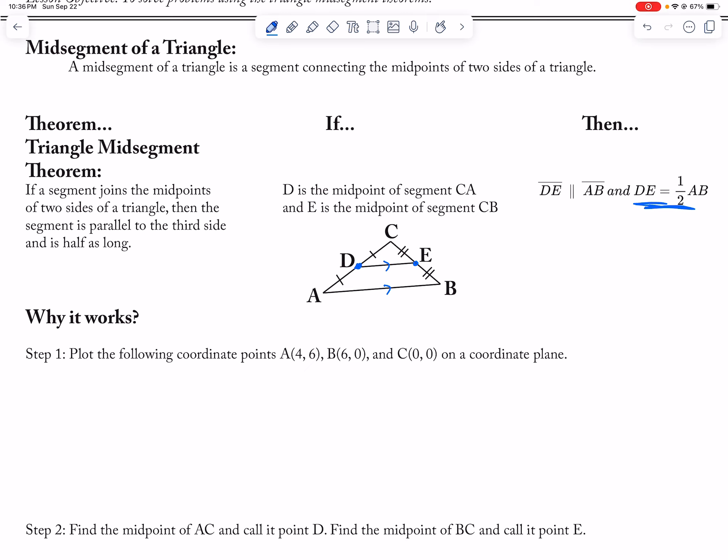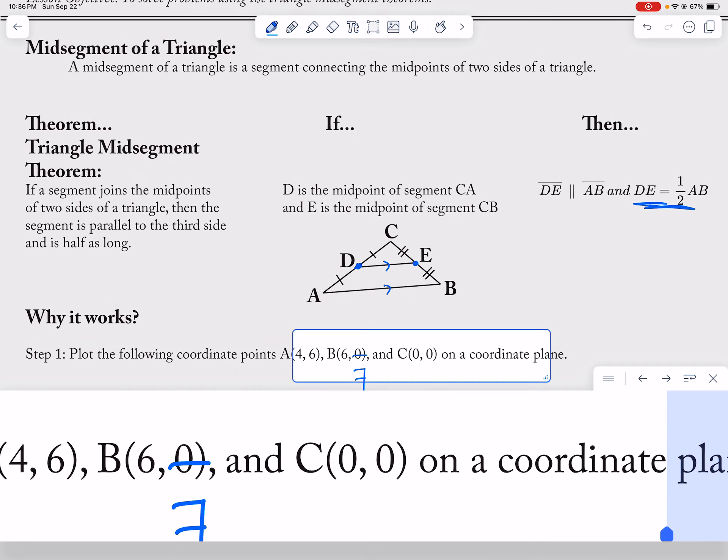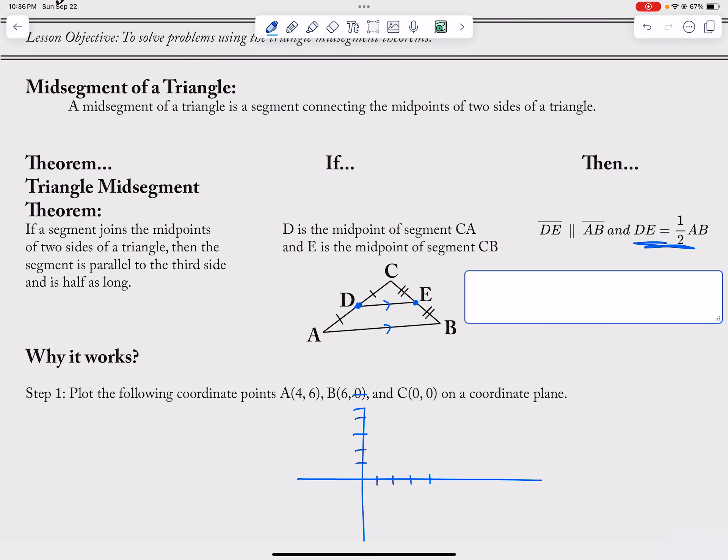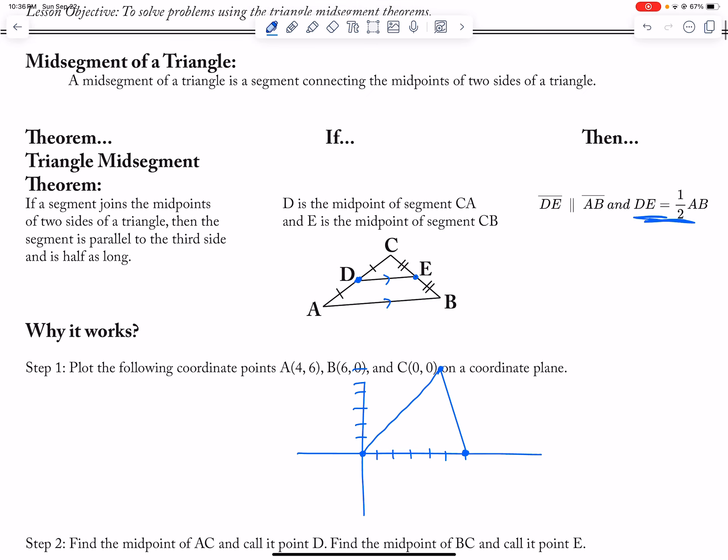So let's just say we had like 1, 2, 3, 4, 1, 2, 3, 4, 5, 6. So here's 4-6 up here. And then 6-0 is here, and then here's 0-0. Right, so here I have this triangle.